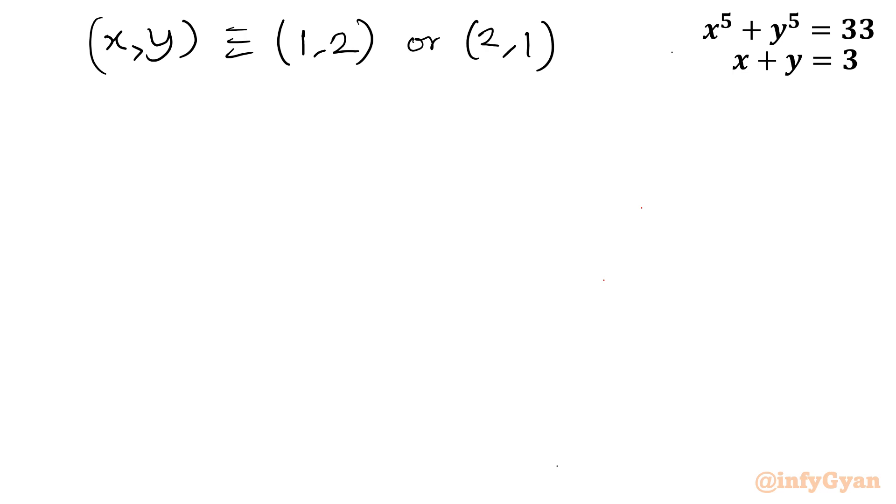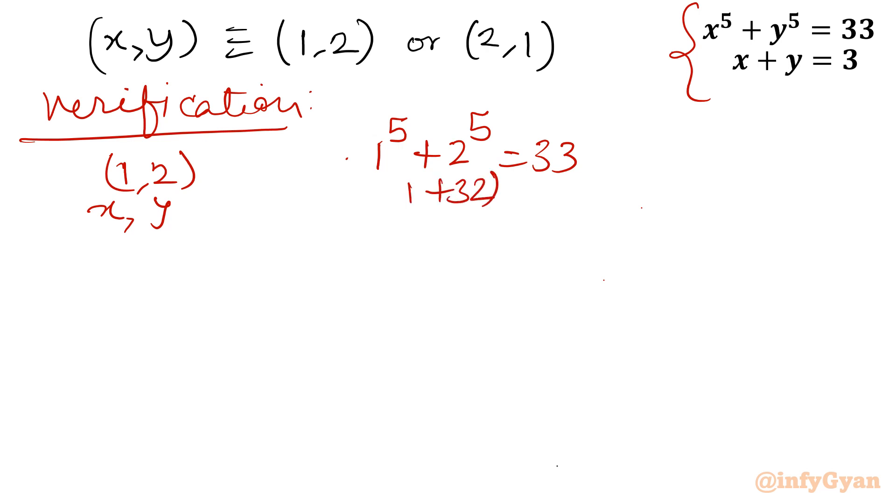Now let's verify this value. So verification. Let me consider x comma y, 1 comma 2. So x is 1, so 1 power 5 plus 2 power 5. Is this equal to 33? Yes, because it is 1 plus 32. Correct. Second equation 1 plus 2 is equal to 3, that will also be correct. Now 2 comma 1, equation is symmetric, so it is always true.